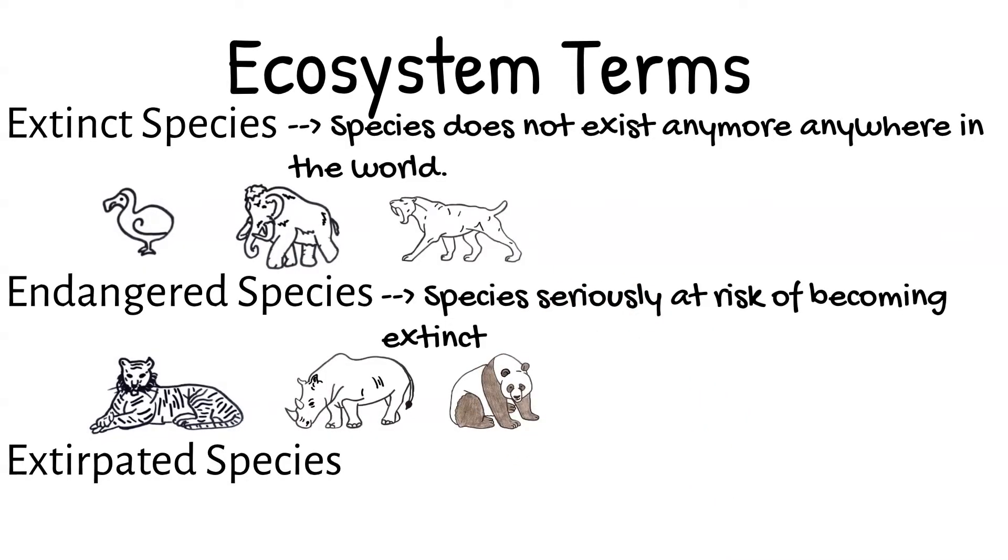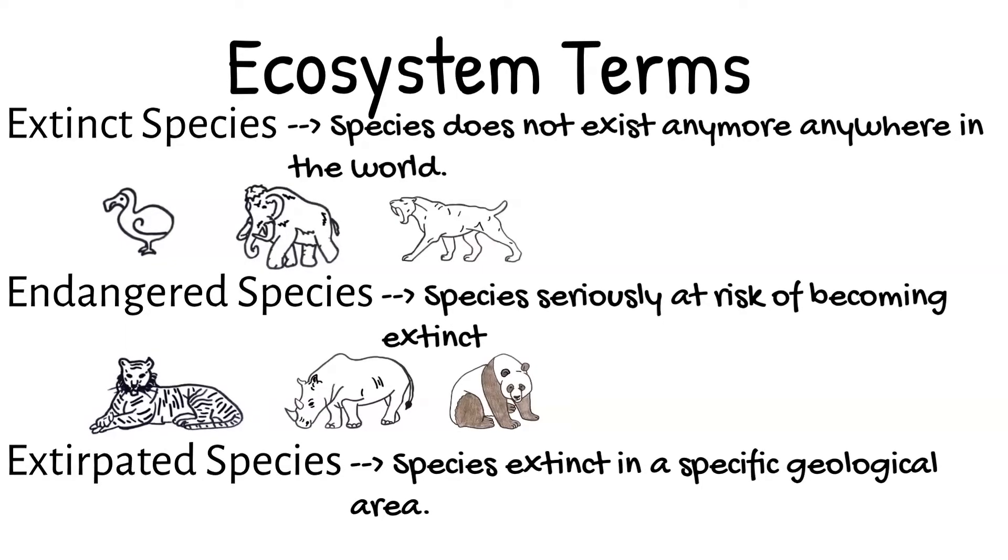Extirpated species are those that are extinct in a specific geological area. There are still some of the species alive in the world but not in an area where they used to be.